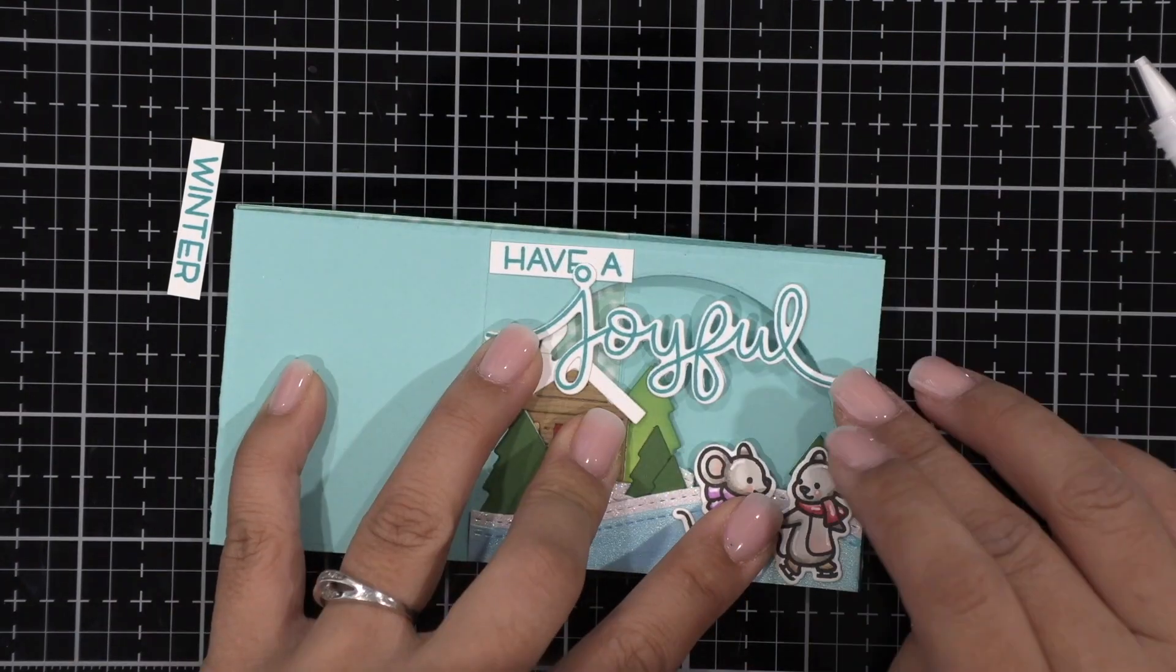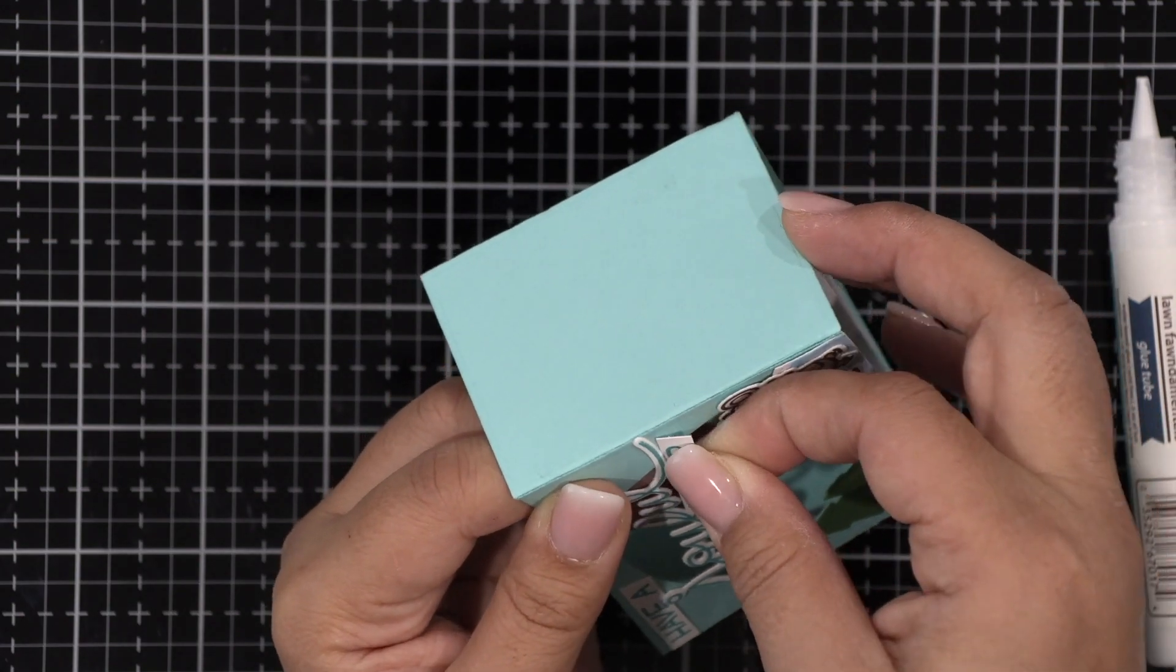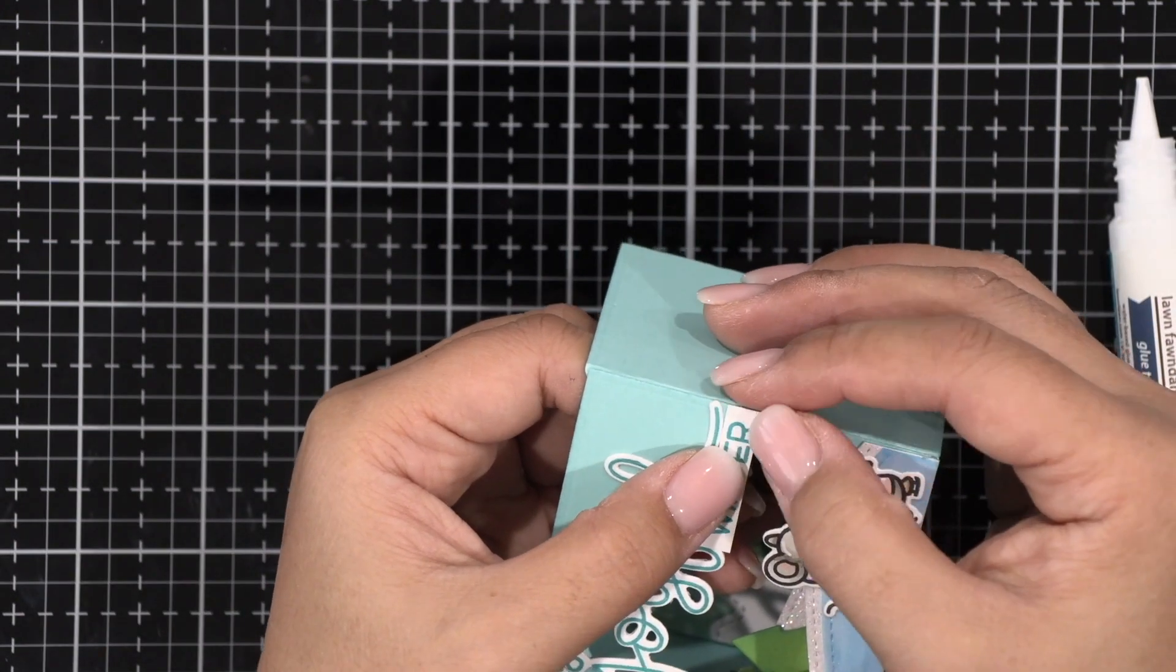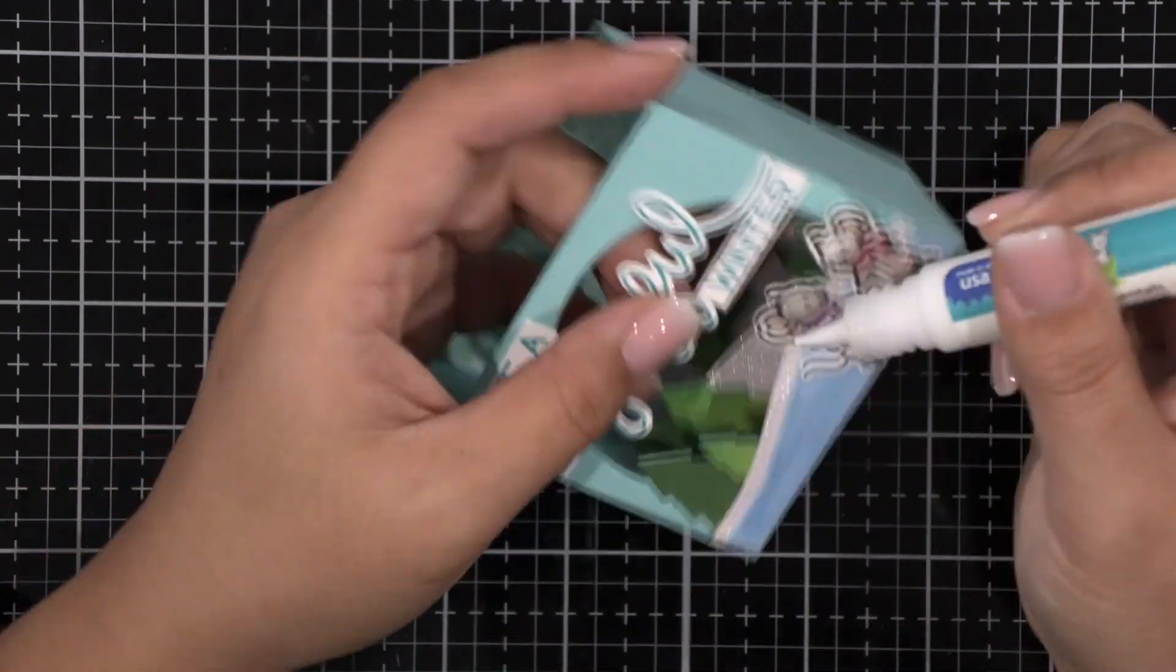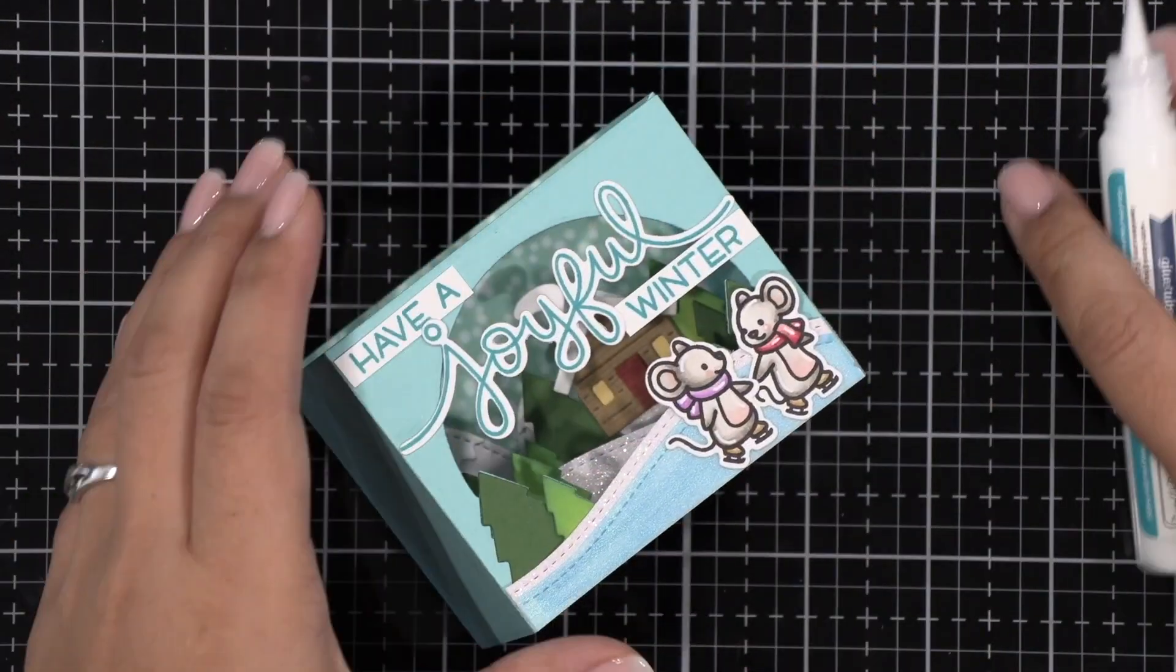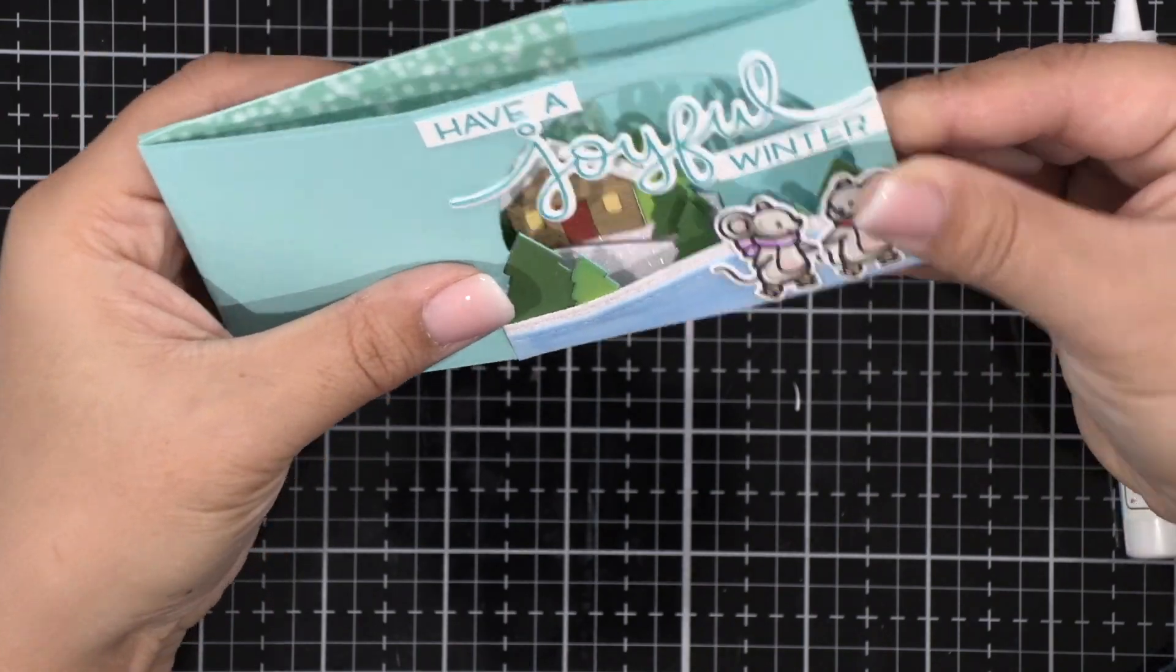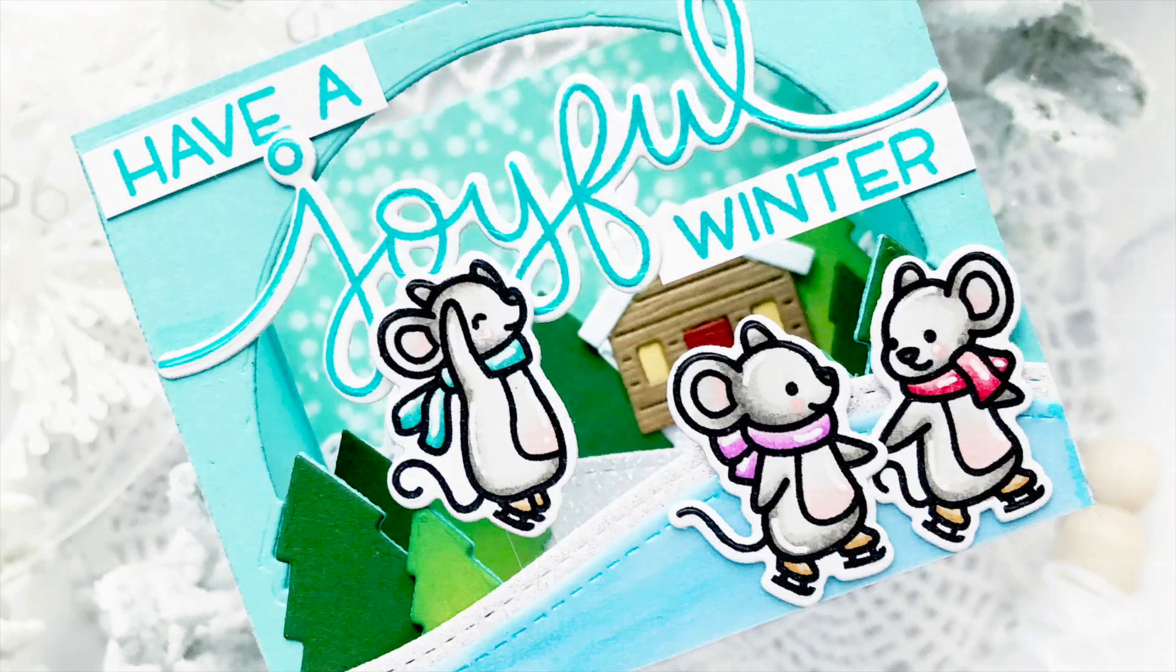I've stamped my sentiment here in peacock ink and then I'm just going to add it on top of my box and then off camera because I forgot to keep recording I went ahead and added that piece of acetate with the mice jumping up in the air and that finishes my mice on ice shadow box card.